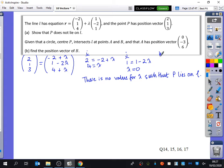So there is no value for lambda such that P lies on L. If you wanted to, you could try it with K as well, and you get 3 equals 4 plus lambda, so lambda equals minus 1. Anything that shows that lambda is inconsistent, because you can't have a different value of lambda for the I, the J, and the K part.